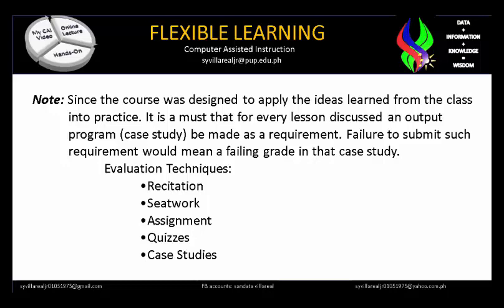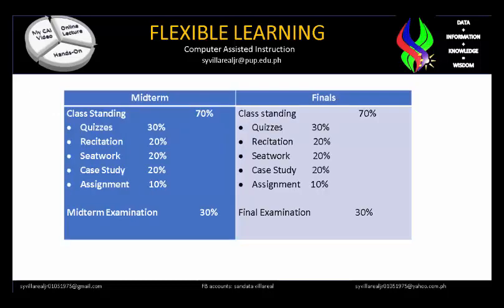Evaluation techniques include Recitation, Sit-work, Assignments, Quizzes, and Case Studies. Under the grading system for midterm: Class Standing is 70%, composed of Quizzes (30%), Recitation (20%), Sit-work (20%), Case Study (20%), and Assignment (10%). Due to the pandemic and online class setup, this grading system may be modified. Midterm Examination accounts for 30%, totaling 100%. Finals follow the same structure. The average of midterm and final grades will be your final average.